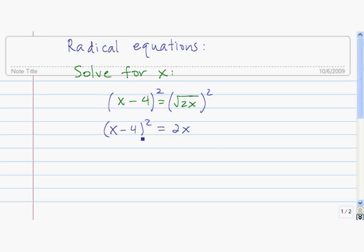Then we distribute this side. x minus 4 quantity squared is really x minus 4 times x minus 4, and that's x squared minus 8x plus 16, equals 2x.